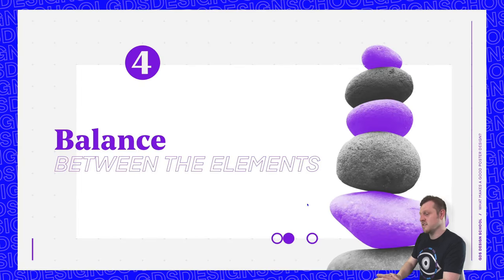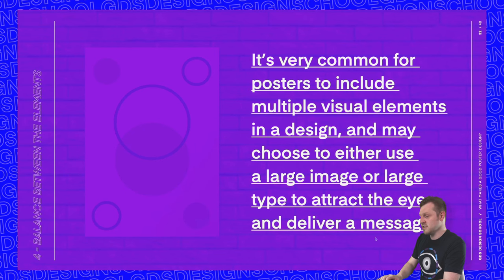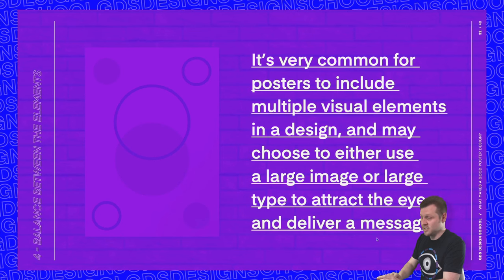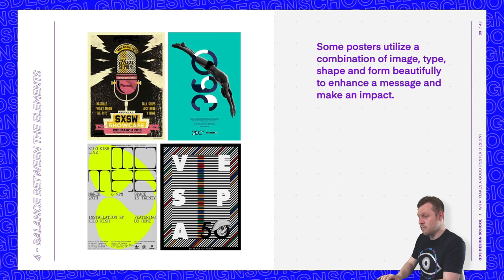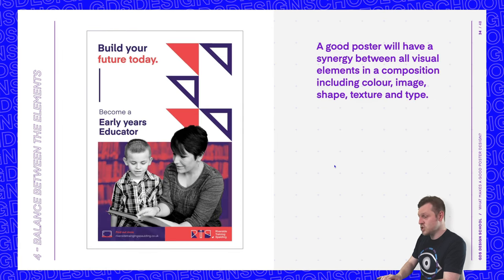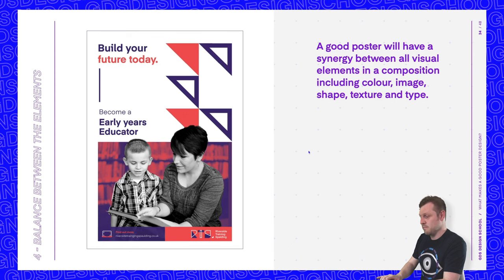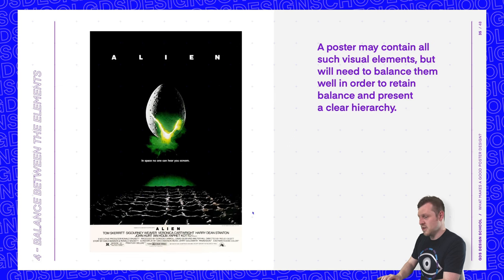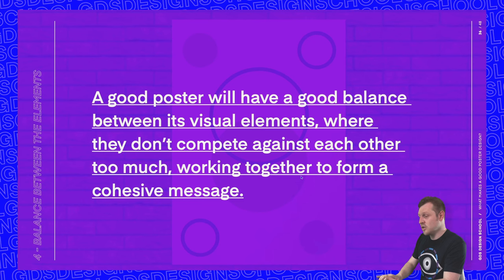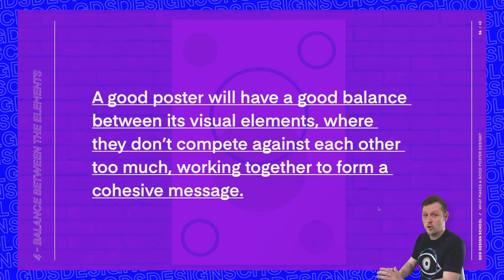Another key factor is balance between the elements. It's very common for posters to include multiple visual elements and may use a large image or large type to attract the eye. However, some posters utilize a combination of image, type, shape, and form beautifully to enhance a message. A good poster will have synergy between all visual elements in a composition — including color, image, shape, texture, and type — balancing them well to retain a clear hierarchy and present a cohesive message.